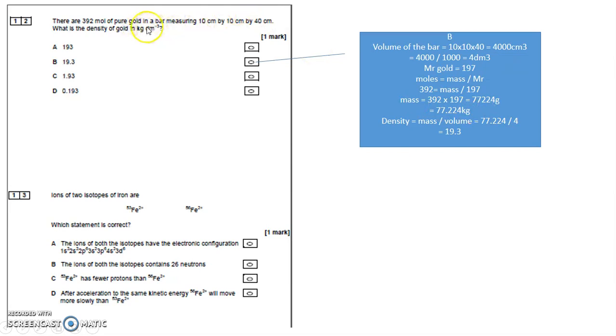Now it wants in kilograms per decimeter cubed. So we've got to get this into kilograms. To get grams into a larger unit value of kilograms, I divide by 1000. 77224 divided by 1000 is 77.224 kilograms. Density is mass divided by volume.